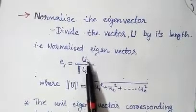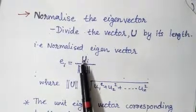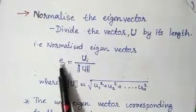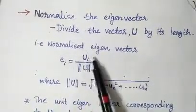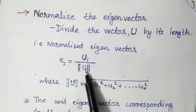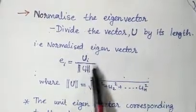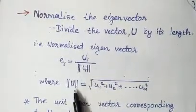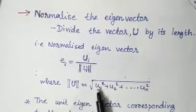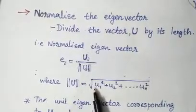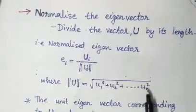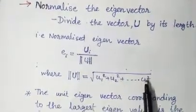Here U_i is the eigenvector corresponding to the i-th eigenvalue, and the normalized eigenvector e_i equals U_i divided by the square root of (U1² + U2² + ... + UN²).